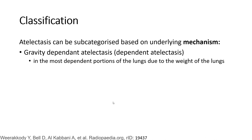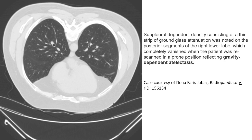Gravity-dependent atelectasis occurs in the most dependent portion of the lung due to the weight of the lung. On CT, a subpleural dependent density consisting of a thin strip of ground-glass attenuation was noted on the posterior segment of the right lower lobe, which completely vanished when the patient was re-scanned in a prone position, reflecting gravity-dependent atelectasis.